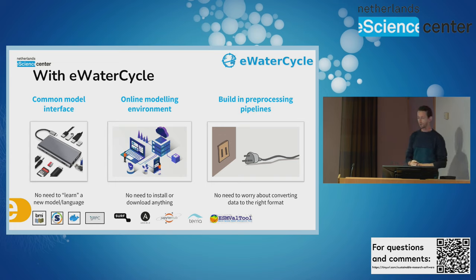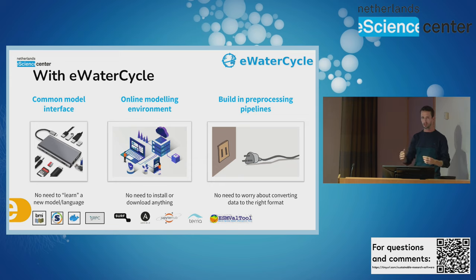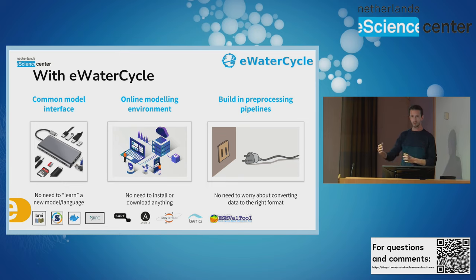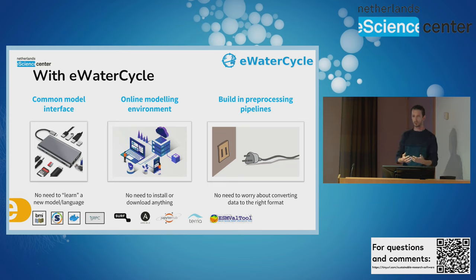Finally, we also offer code to help with pre-processing steps. All the forcing data comes in different formats, different variable names, and so on. We use a pre-processing pipeline using ESMValTool — just presented before — to take all these different data sources, cut out a specific catchment that we want, and convert it to the right input format understood by the model.